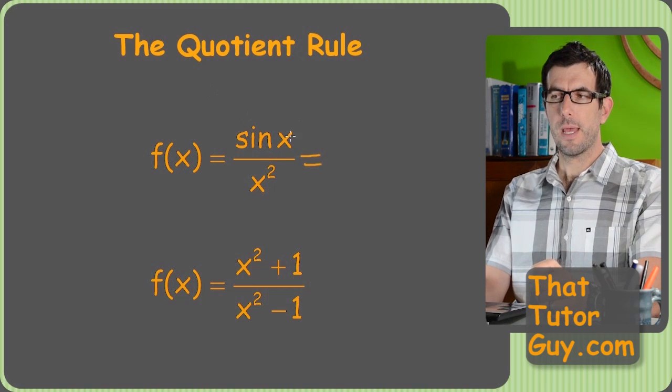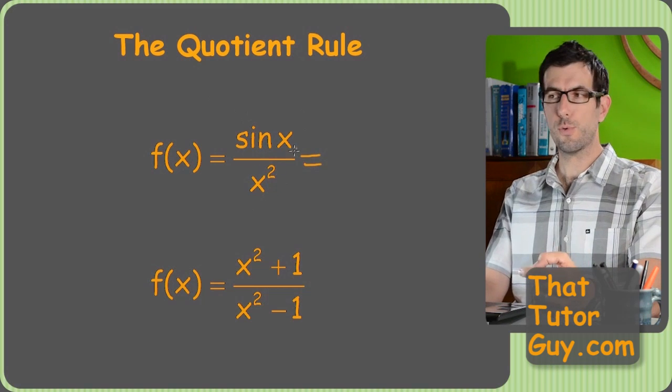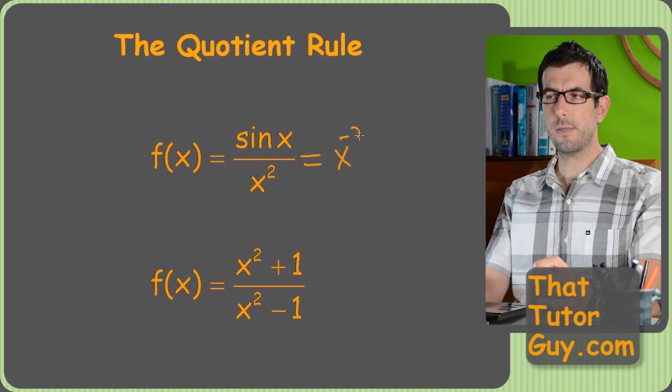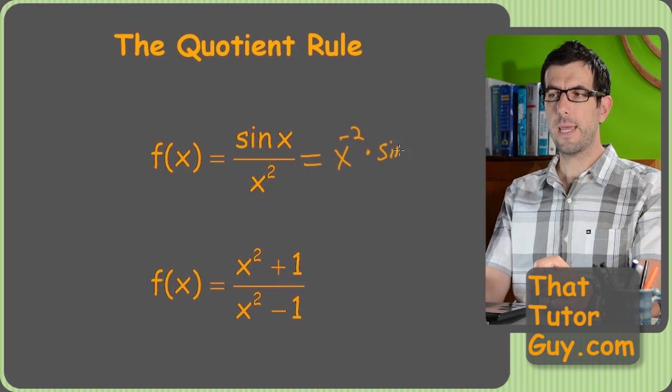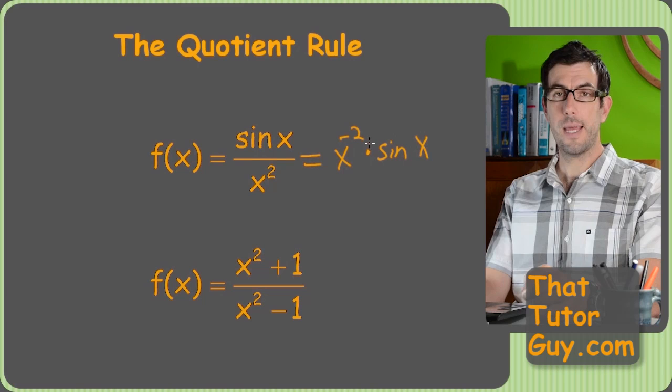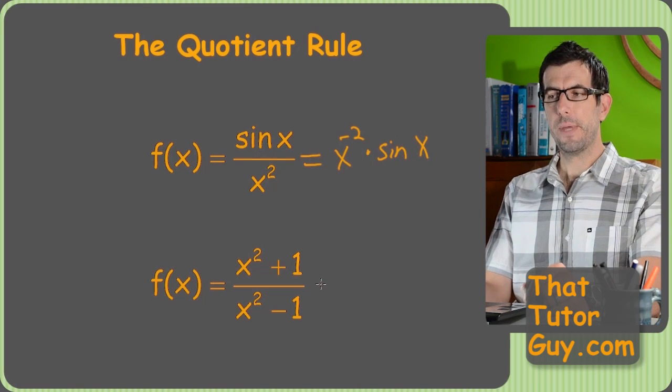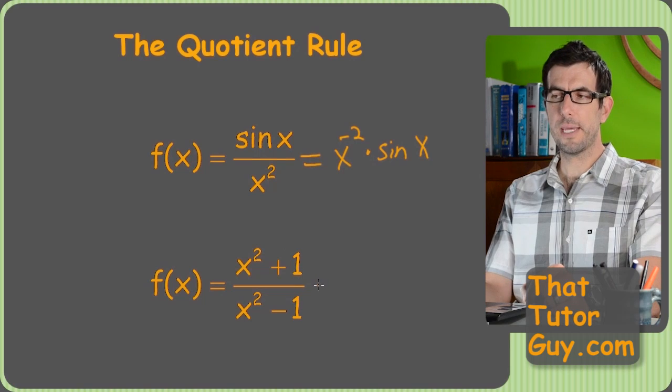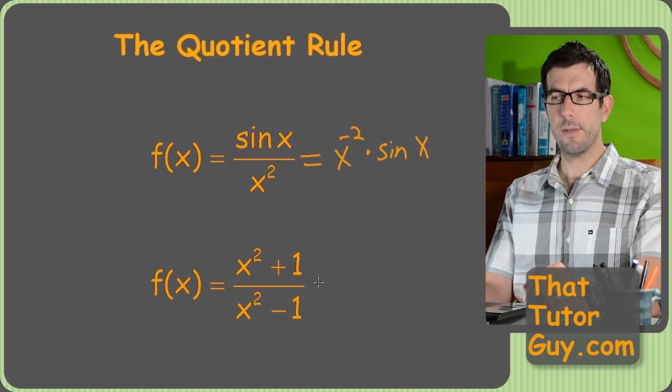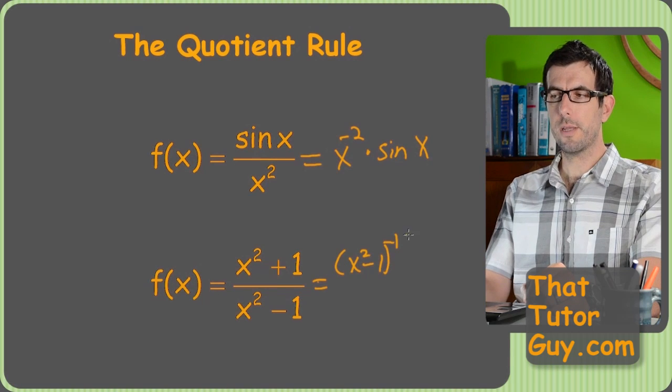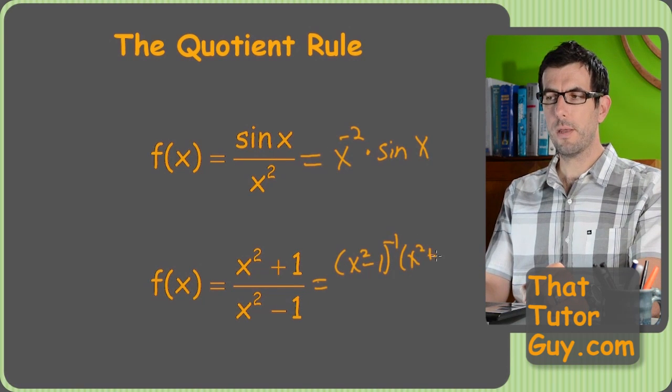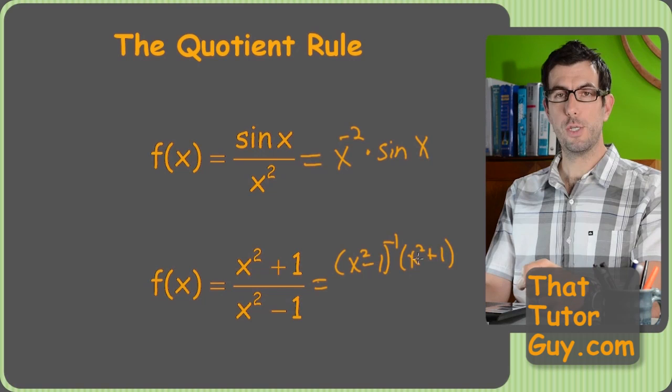Like this example, I could, to get out of the quotient rule, turn this into x to the minus 2 times sine x. And honestly, I would recommend you do that because the quotient rule, I just don't like it. But there are other times, we could actually do the same thing here. The reason not to do it on this one, we could do x squared minus 1 to the negative 1 times x squared plus 1, but that's just trading one injury for another.